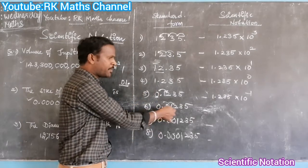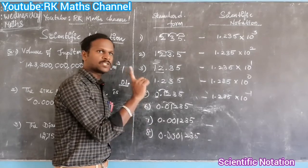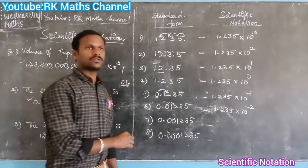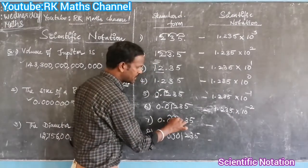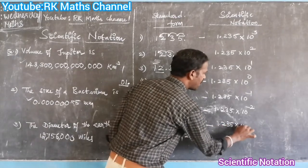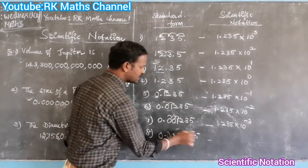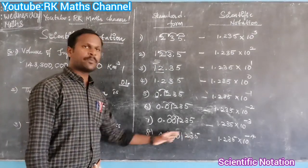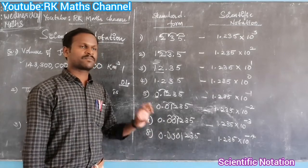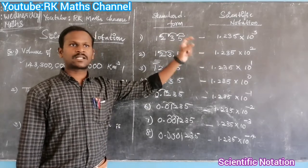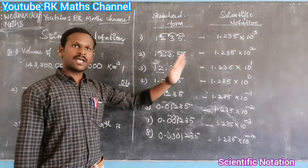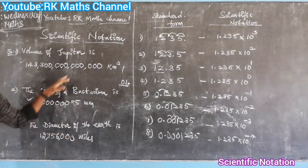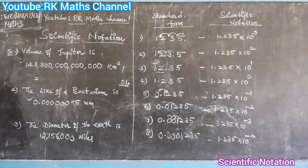1.235 into 10 to the power of minus 2. Minus 2 is right side. 1.235 into 10 to the power of minus 4. 1.335 into 10 to the power of minus 4.